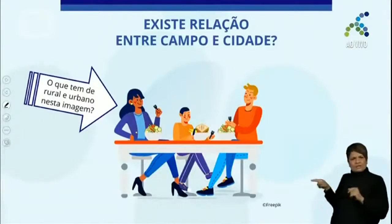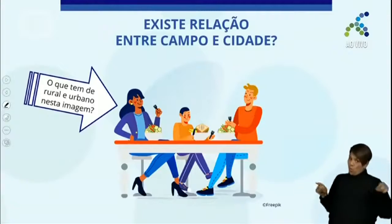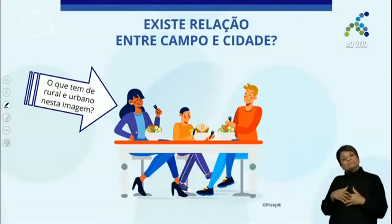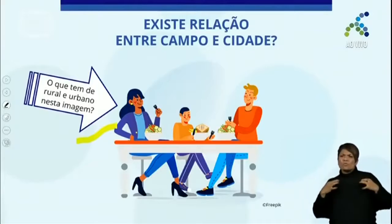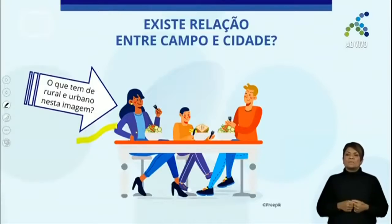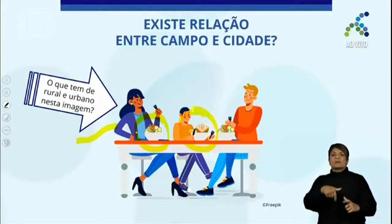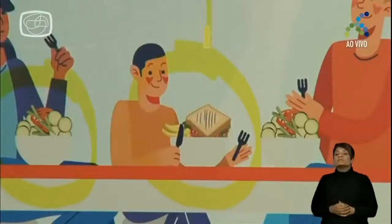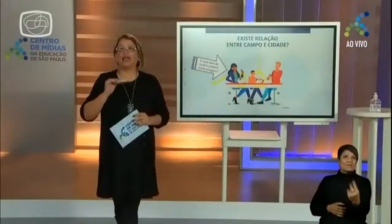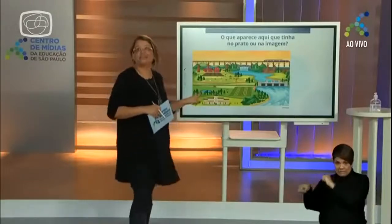Observe essa imagem. Existe relação entre campo e cidade? O que tem de rural e urbano nessa imagem? Eu tenho roupa — roupa é campo ou é cidade? Cidade. E esse prato de comida? Esse pão é caseiro ou industrializado? Os dois alimentos — campo e cidade. Porque, na realidade, para se fazer comida industrial, ela tem que ser plantada em algum lugar.